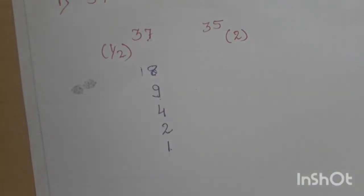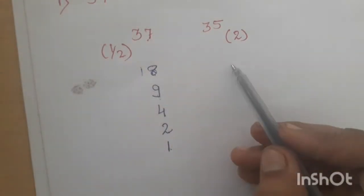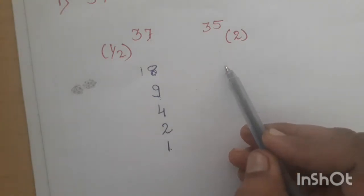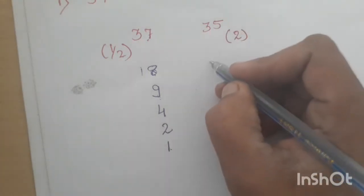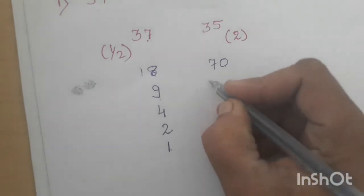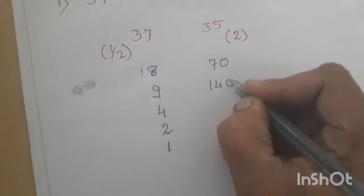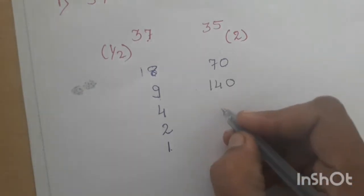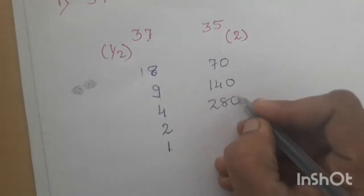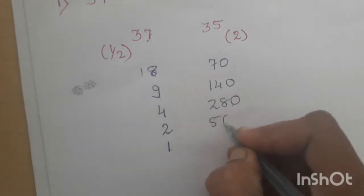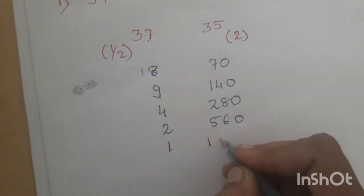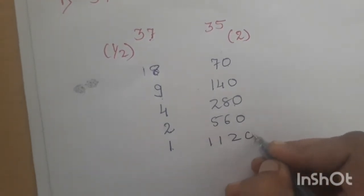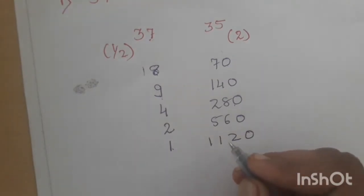Simultaneously, you have to make the other column multiplied by 2. So starting from 35: double is 70, 70 double is 140, 140 double is 280, 280 double is 560, and 560 double is 1120. So up to here, I hope that you are clear.